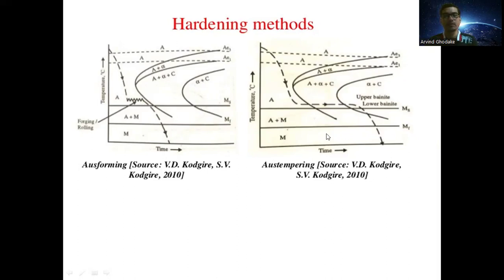Next is austempering. This is again the TTT diagram showing transformation of austenite into pearlite, bainite, and martensite. In austempering, there is sudden cooling of the steel or metal using water as the coolant media so that the cooling curve bypasses the nose of the TTT diagram. As you can see clearly, this cooling curve does not touch the nose of the TTT diagram.